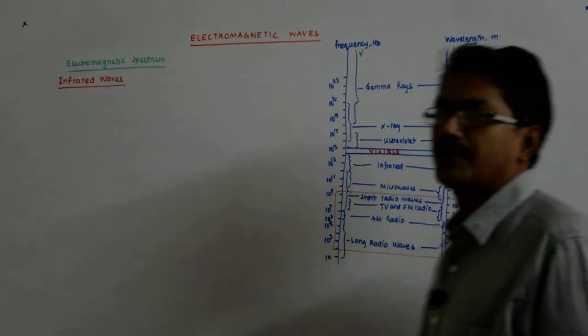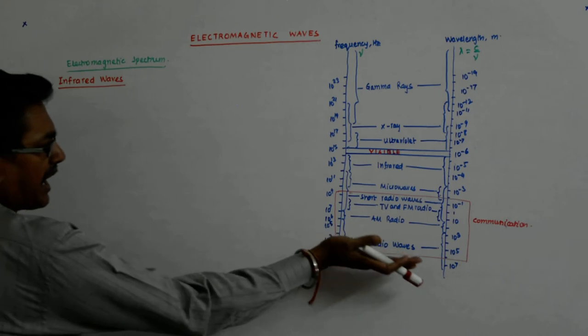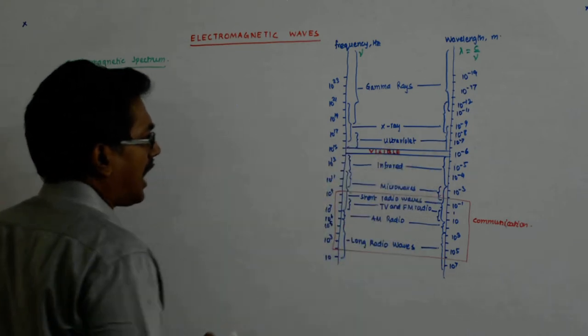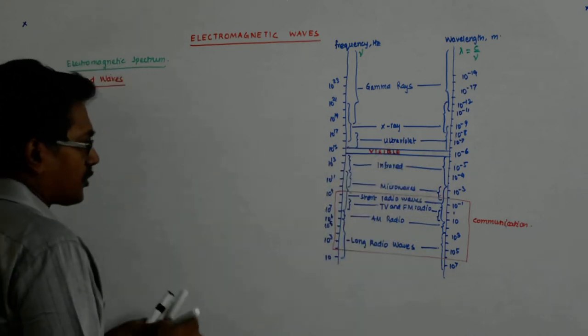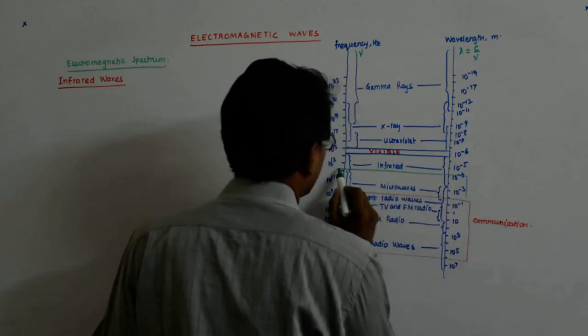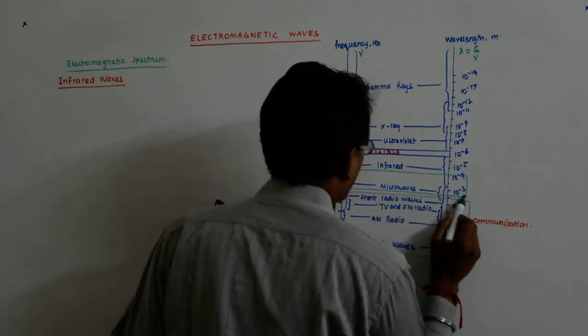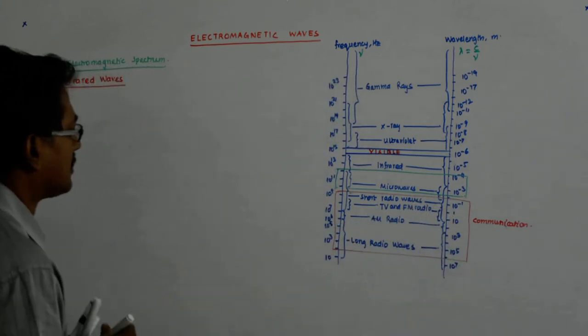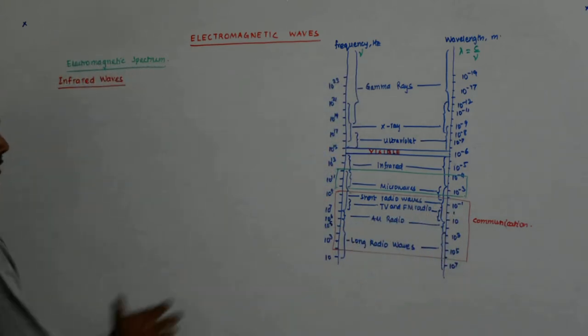Now we come to the next set of electromagnetic waves. We have been going up the spectrum. We were in the gigahertz range for microwaves.